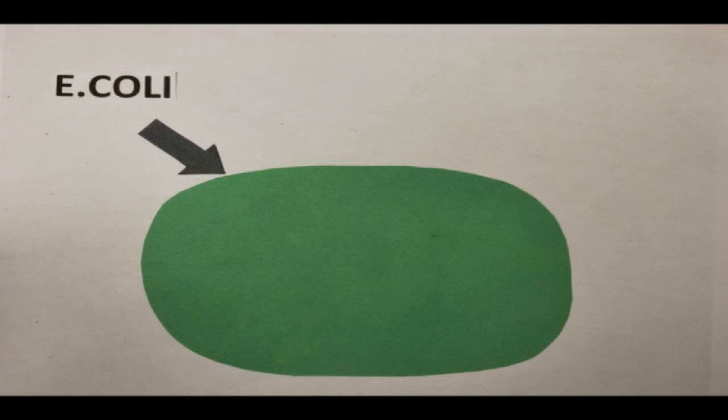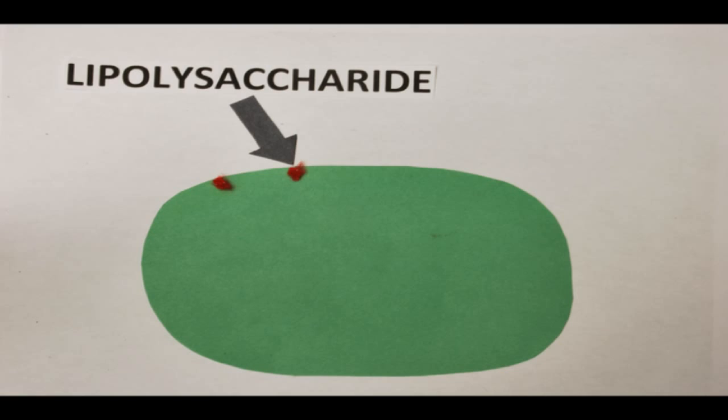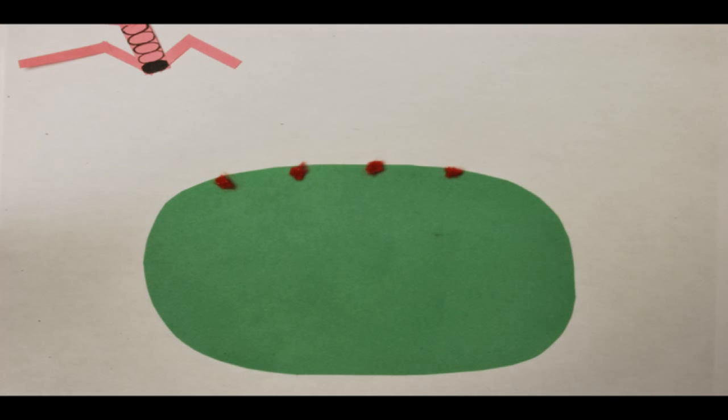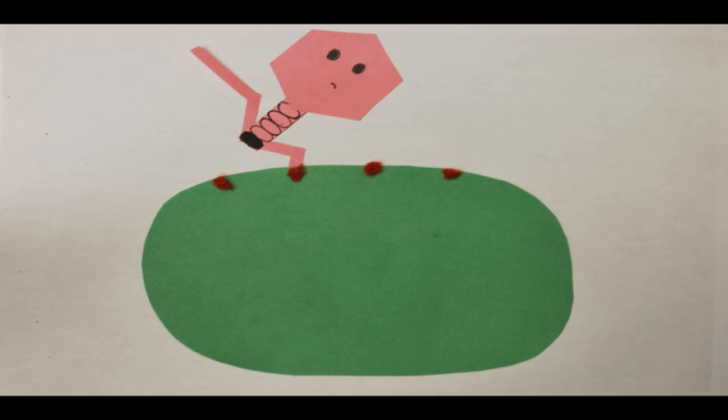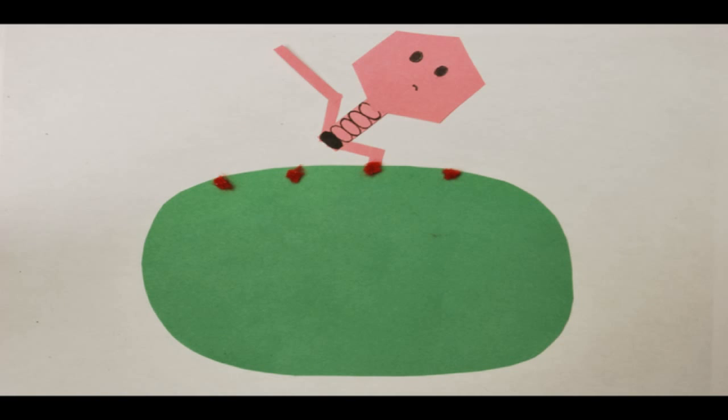This here is a regular E. coli cell, and on the cell surface you have lipopolysaccharide proteins. The T4 comes in contact with the cell and scans the surface of the E. coli looking for an optimal penetration site.